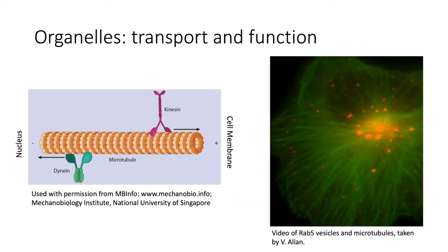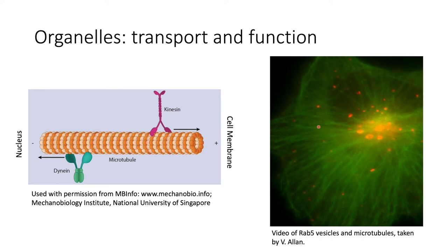Here you see a biological experiment showing rapid-fired vesicles — endosomes shown as red dots — travelling along green lines, microtubules, to the centrosome where the microtubule organising centre is. These endosomes are known to attach to motor proteins such as kinesins or dyneins that walk along these microtubules in a directed manner. Our goal will be to quantify how these endosomes move along these microtubules and how they are transported.